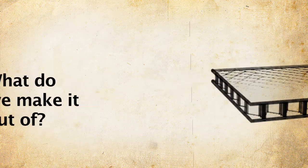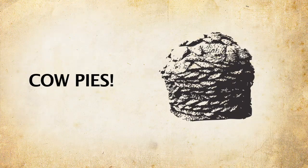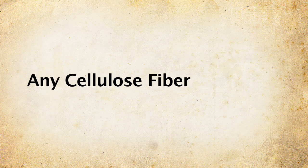What do we make it out of? We make it out of cardboard, office paper, newsprint, wheat straw, agri-fiber, sometimes cow pies, hemp, jute, sugar cane bagasse, and waste wood fiber—almost any kind of fiber.